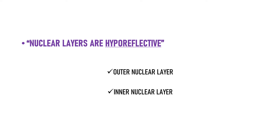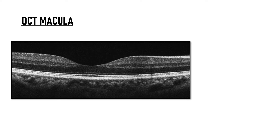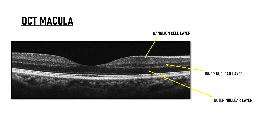The one thing that will help you easily and quickly identify the layers of retina is to remember that the nuclear layers are hypo-reflective on OCT scan. So what are the three nuclear layers of retina? The outer nuclear layer, the inner nuclear layer, and the ganglion cell layer. Moving from outside to inside, the first hypo-reflective layer is the outer nuclear layer, the next is the inner nuclear layer, and the third is the ganglion cell layer.